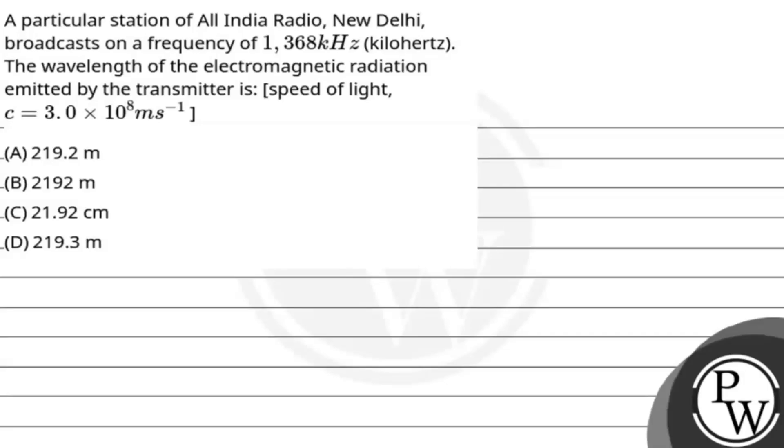Hello, let's read the question. A particular station of All India Radio, New Delhi, broadcasts on a frequency of 1,368 kHz. The wavelength of the electromagnetic radiation emitted by the transmitter is—we have to find the wavelength when frequency is given in this question.